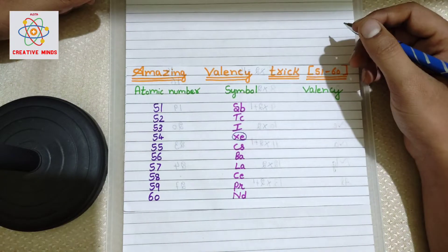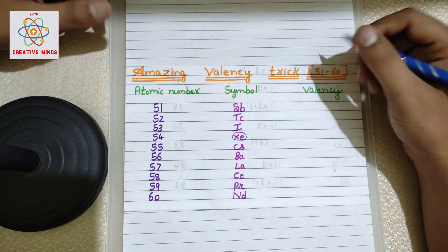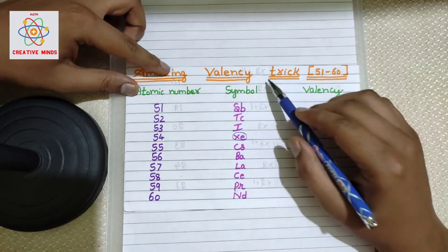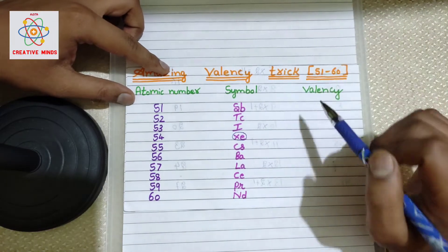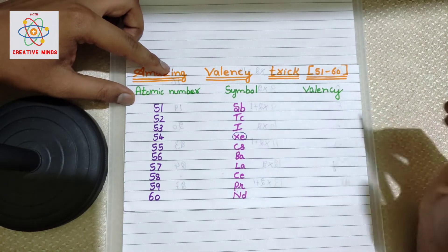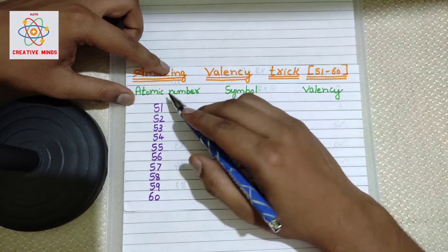Alright, hello students, welcome you all to this YouTube channel. So today we are going to discuss some amazing shortcut tricks to learn the valences from atomic number 51 to 60th elements. If you like the video, don't forget to hit the like button.